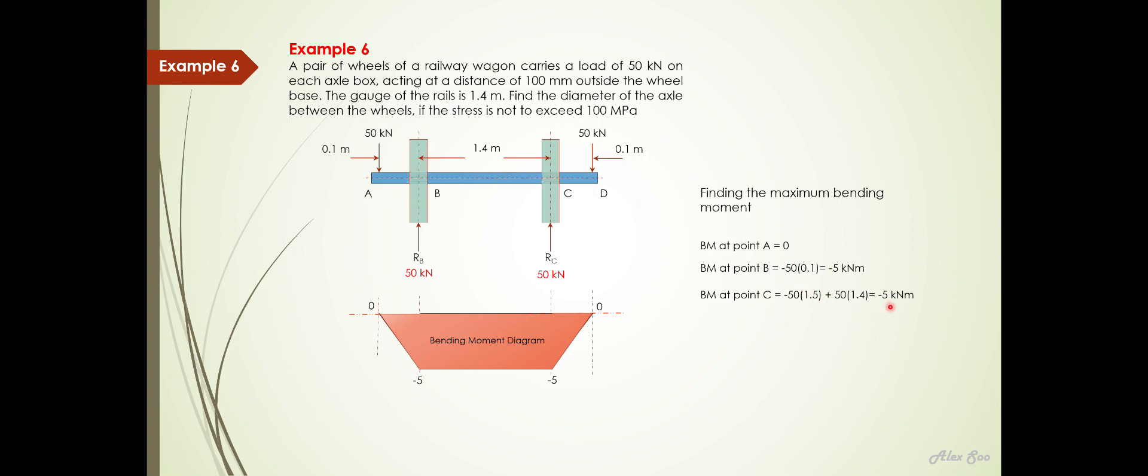So you get a resultant bending moment at point C as negative 5 kilonewton meter. And at point D, definitely you get a zero because from the beginning, we consider the beam or the shaft to be equilibrium. So that is why you will get a zero bending moment at the final point. So from these values here, now you can plot this diagram. That is the bending moment diagram.